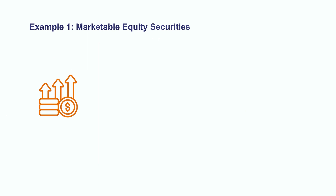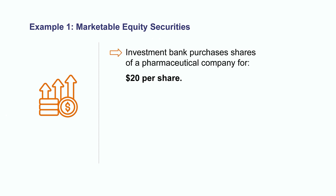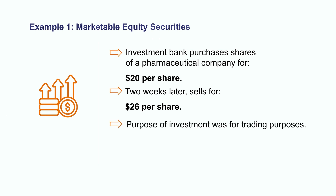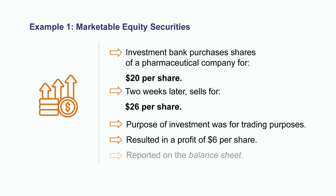Let's look at a couple of examples of these types of investments. In each example, the company is investing in marketable securities for a different purpose. In example number one, an investment bank in the business of buying and selling shares for its clients decides to invest in the common stock of a new pharmaceutical company. It buys the shares for $20 per share and just two weeks later sells these same shares for $26 per share. The purpose behind this investment was for trading purposes, which resulted in a profit of $6 per share. During the short period of time that the company owned these shares, they would need to report the value of these shares on their balance sheet.